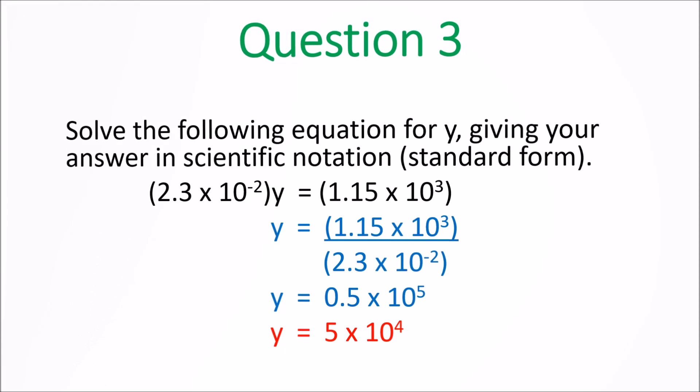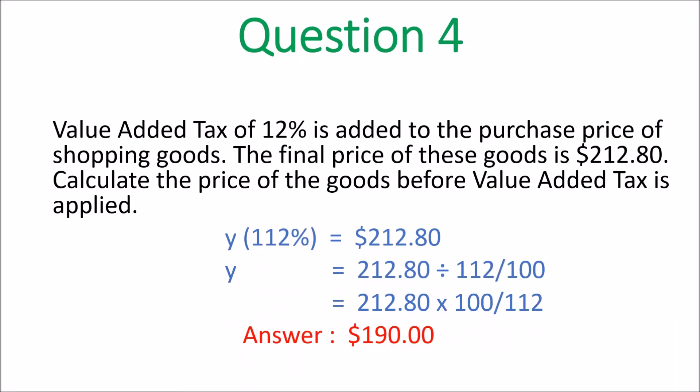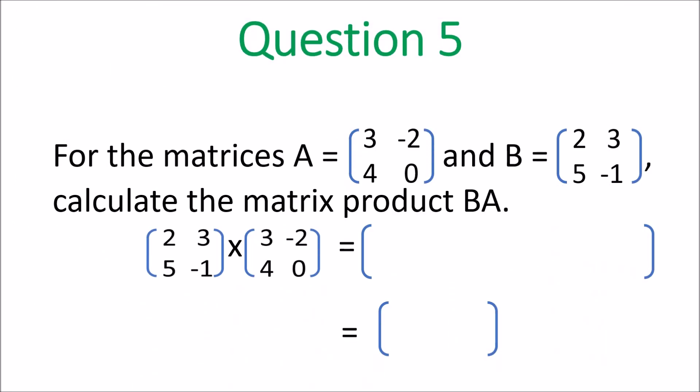Question 4: value added tax is added to the price, the final price is $212.80. You want to know what it was before 12% VAT was added, so y times 112 over 100 equals $212.80. Divide by 112 over 100 — that becomes 100 over 112 — and use your calculator. Final answer: $190.